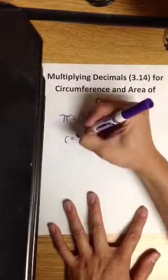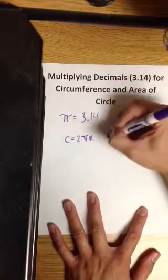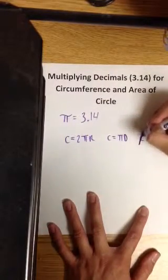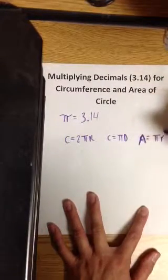So, there's three formulas you need to know. C = 2πr. Circumference is πd. And area of a circle is πr².